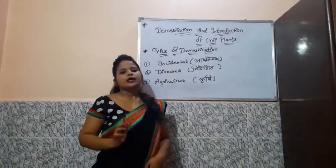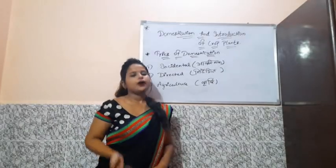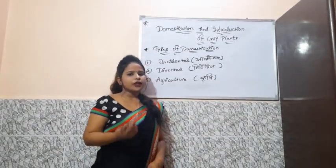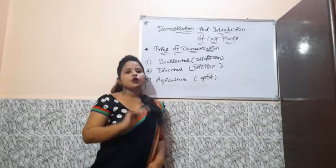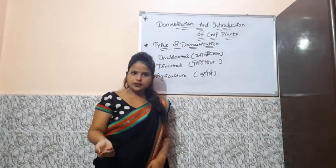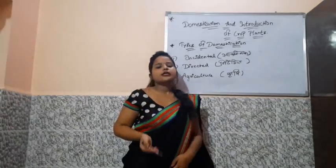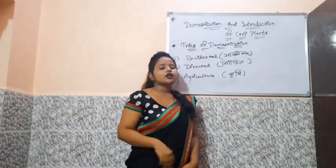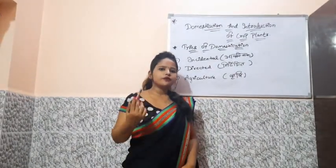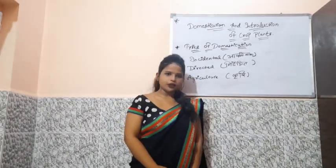Next is: where did domestication start? Paaltu banana kahaan se shuru hua? The grains of rye with domestic traits were recovered from 11,000 BC. Rai ke daane gharelu lakshanon ke saath 11,000 ishvipoorv se prakaht hue the.